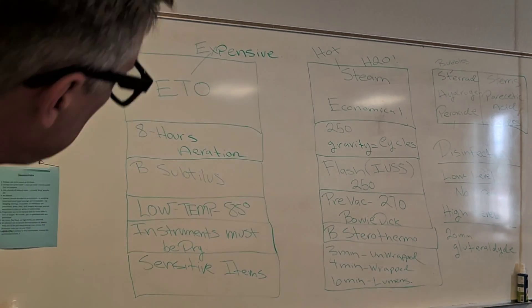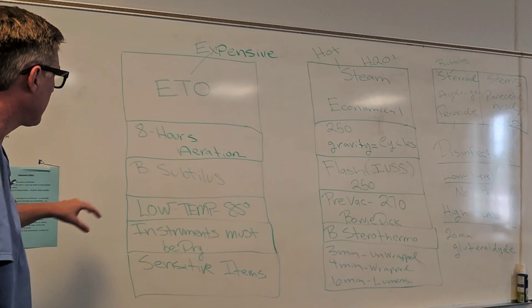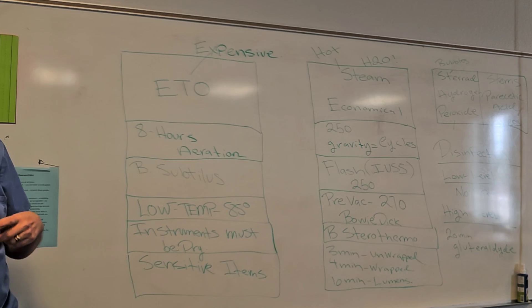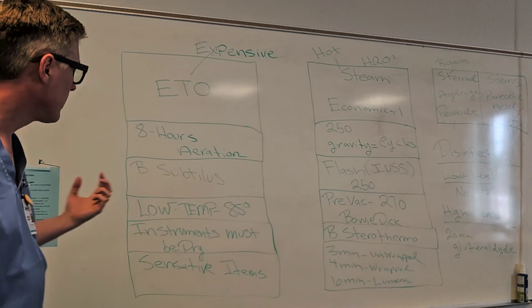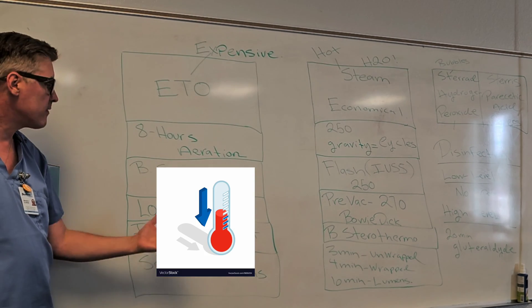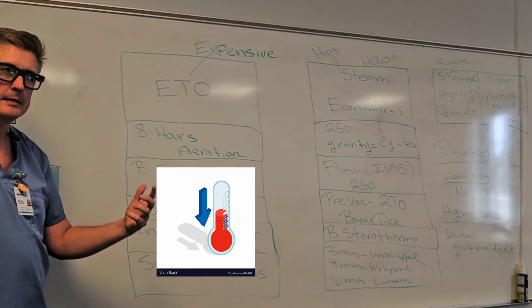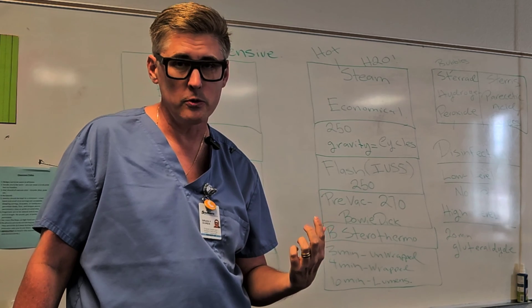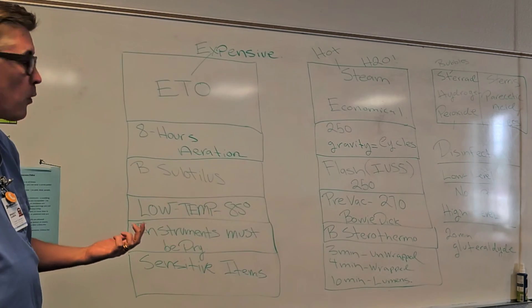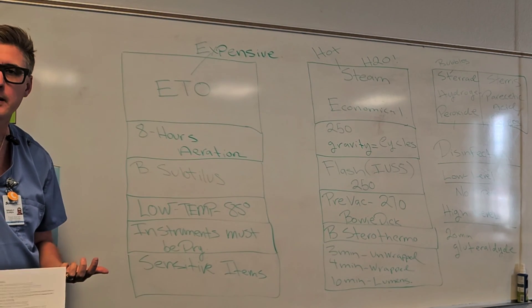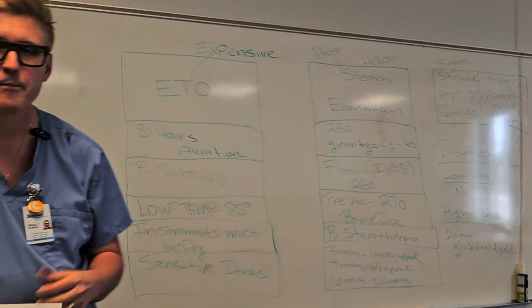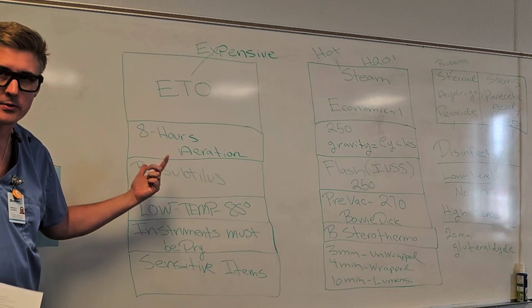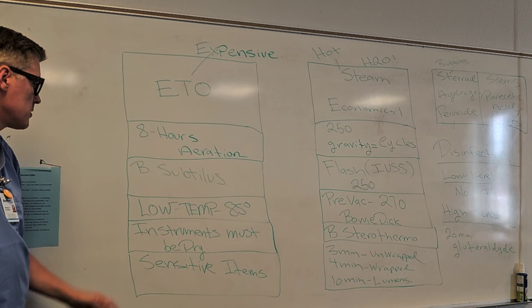Moving right along, I want you to think economical, right? Eight hours aeration. Bacillus Subtilis is the biological indicator. Low temperatures, 85 degrees. So if you see questions on the CST exam which low temperatures, 85 come to mind. More likely, they're referring to an ethylene oxide process. So if you have this process of elimination, more likely that's going to be the right answer. ETO or ethylene oxide gas process for sterilization is the right answer.